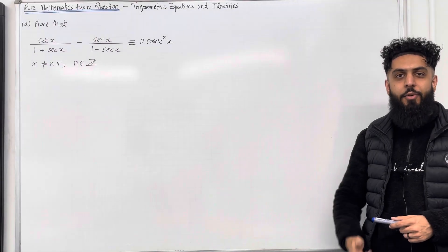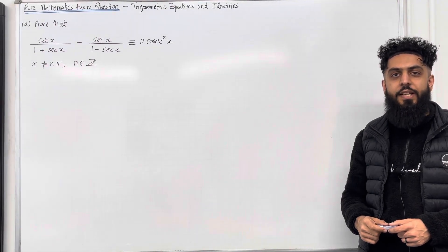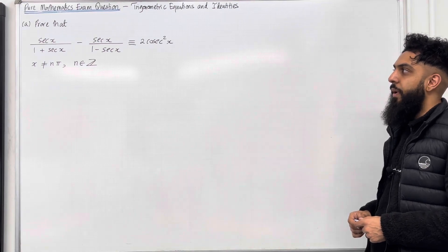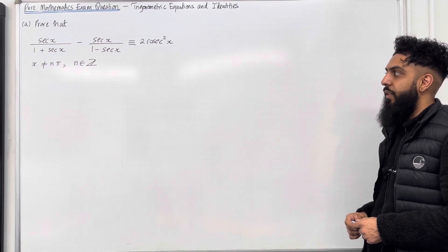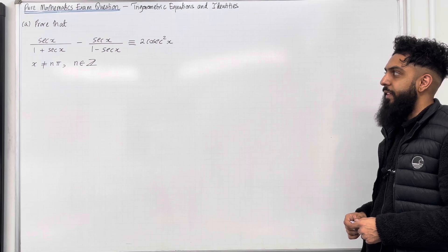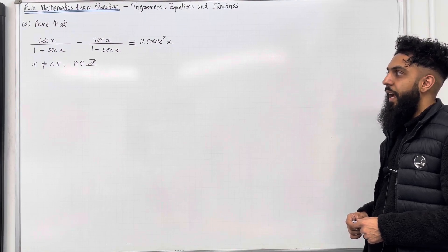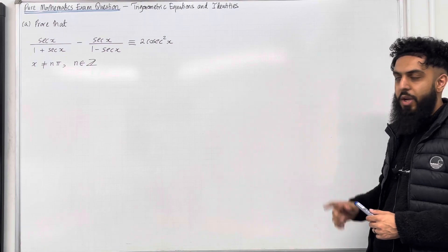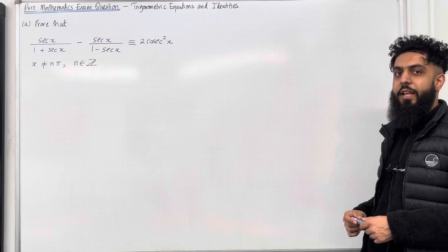Welcome back. In this YouTube video I'll be looking at a pure mathematics exam question on trigonometric equations and identities. Here is the exam question. Part A: prove that sec x over 1 plus sec x, minus sec x over 1 minus sec x, is identical to 2 cosec squared x, where x is not equal to nπ, n is an element of the set of integers. Please pause the video and have a go at part A. Once you've got your complete solution, then play the video.